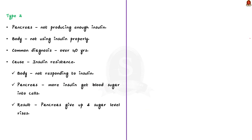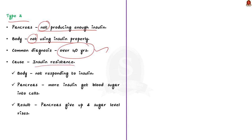Type 2 diabetes occurs when the pancreas is not making enough insulin or the body isn't using insulin well. This type is more common over the age of 40, but it can also happen at any age. The cause is insulin resistance — a condition where the cells in the body do not respond to insulin and cannot take glucose from the blood. The pancreas pumps out more insulin, but over time the cells stop responding. Eventually, the pancreas gives up producing insulin and blood sugar keeps rising.